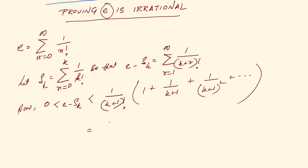So this is equal to 1 by k plus 1 factorial into - as you can see this is basically a GP. So this reduces to 1 by k plus 1 factorial into 1 by 1 minus 1 by k plus 1.